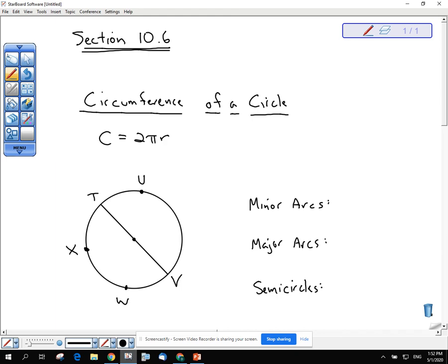Geometry section 10.6 circles and arcs. We have for starters the formula for the circumference of a circle. You've probably seen this before. It is 2 pi r. Now I do know that could also be expressed as pi times diameter.